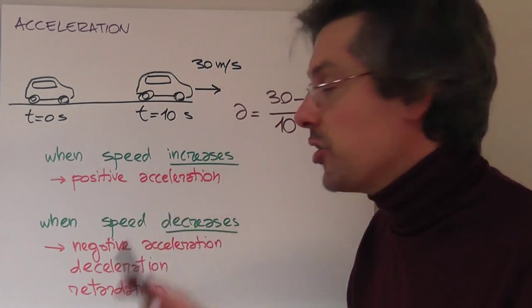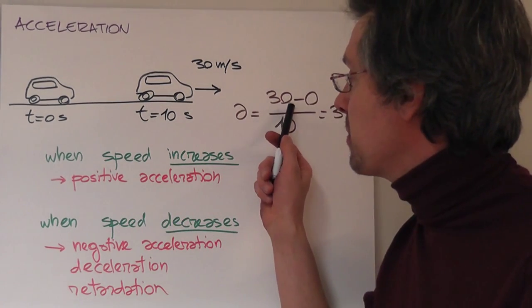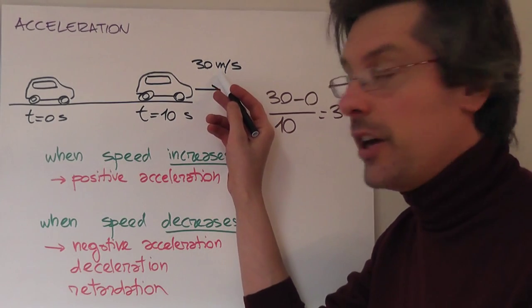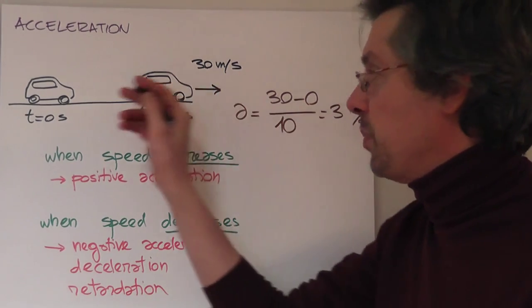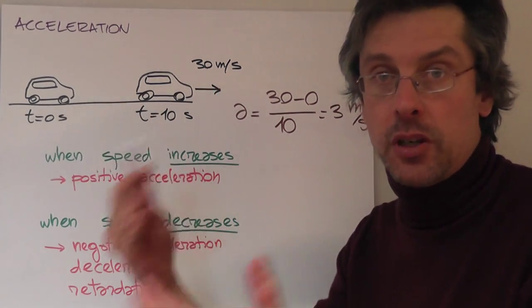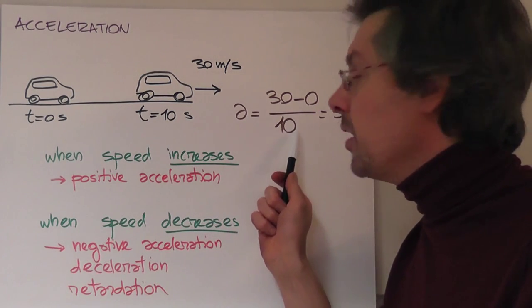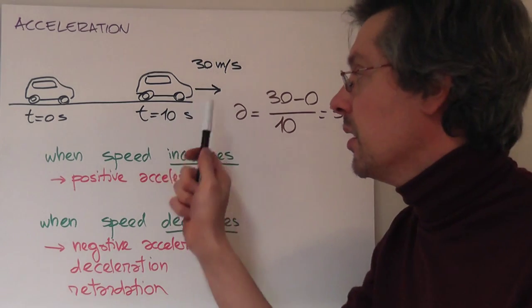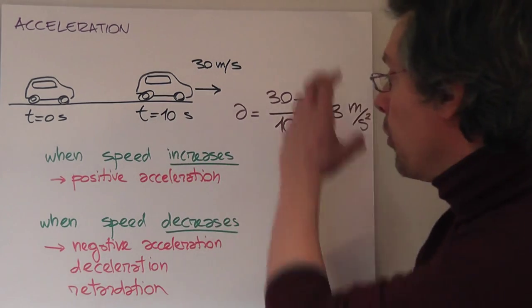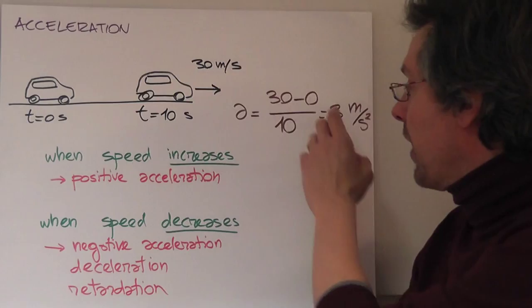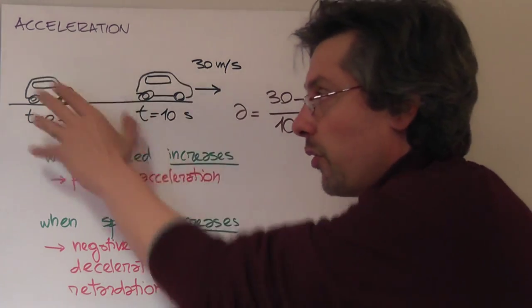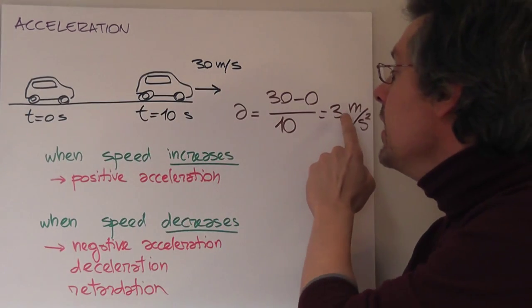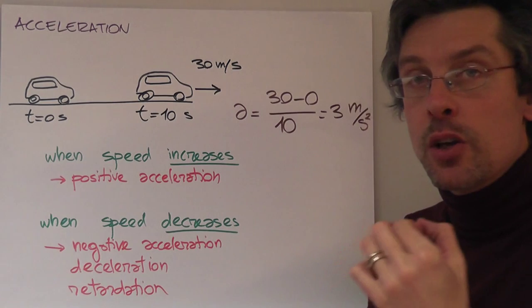a, that is the acceleration, is equal to the final speed, the final speed is 30 minus the initial speed, the initial speed was zero because the car started from rest, divided by the time taken for this acceleration, for this change of speed, which is 10 seconds. We work out our math and the result is that the acceleration for this car is 3 meters per second squared.